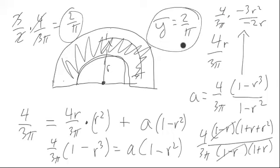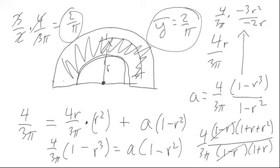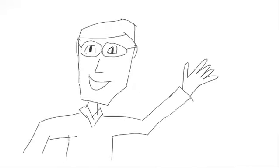So we have y-bar of that thin wire semicircle is two over π. Thanks for watching.